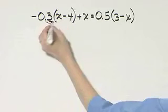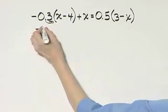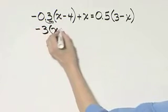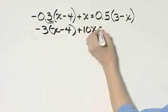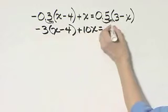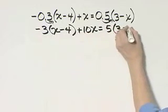So this by 10, it becomes negative 3 times x minus 4. This by 10 becomes 10x equals, and then this by 10, 5 times 3 minus x.